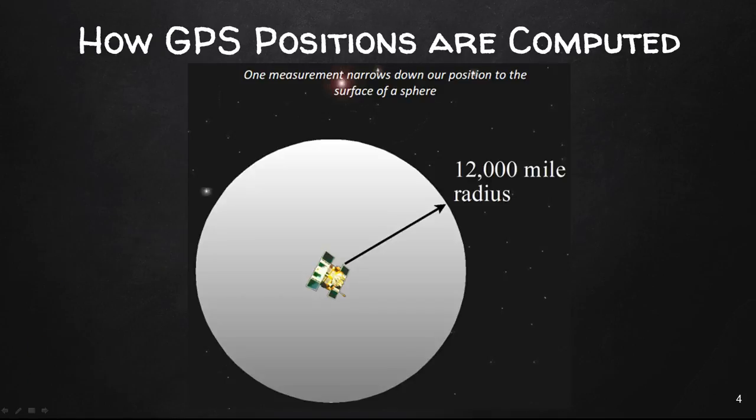So here we talked previously about 2D trilateration. Now we're going to look at this from a 3D perspective. One measurement narrows down our position on the surface of a sphere. We know that we're somewhere 12,000 miles away, somewhere in this gray area.